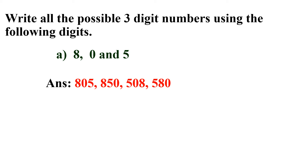Here, it is 5. 508 is the first possible three digit number starting with 5. Next, interchange the last two digits to get 580. So, the answer is 805, 850, 508 and 580.